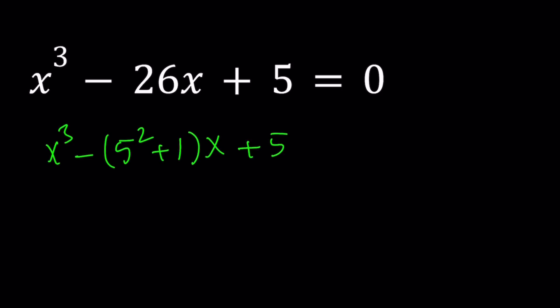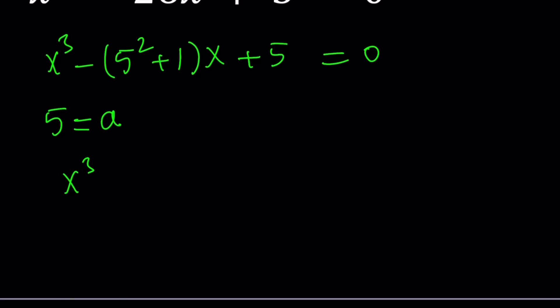And then I'm going to go ahead and replace 5 with a variable. Normally we do the opposite. So let's go ahead and replace 5 with a. And we're going to get x cubed minus (a squared plus 1)x plus a equals 0.